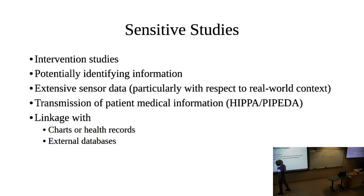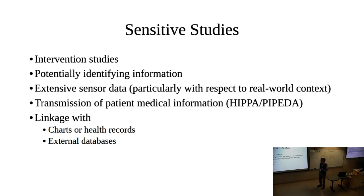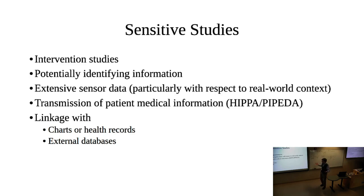There's a set of studies that are particularly sensitive. These include intervention studies, studies that involve potentially identifying information, and studies involving special populations vulnerable to stigma and discrimination. This might be people living with HIV/AIDS, transgendered individuals, individuals who have a history of past trauma or abuse they may not want widely shared, or a history of drug abuse — even those who are now clean may not want that history known.